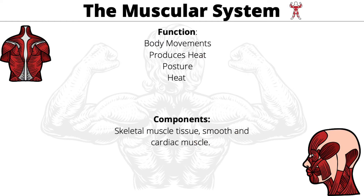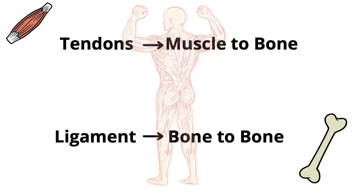The muscular system provides movement by contracting our muscles, gives us posture, and produces heat. Its components are skeletal muscle tissue, smooth muscle, and cardiac muscle. An important distinction: tendons connect muscle to bone, and ligaments connect bone to bone.